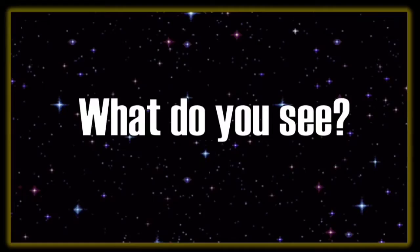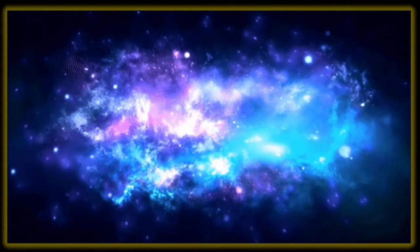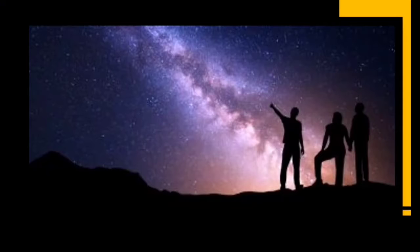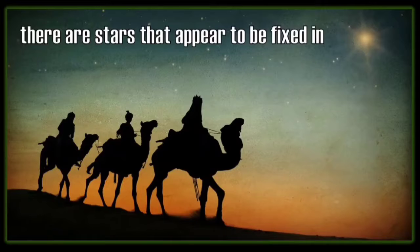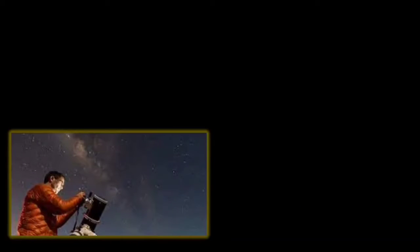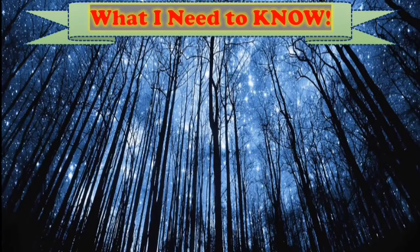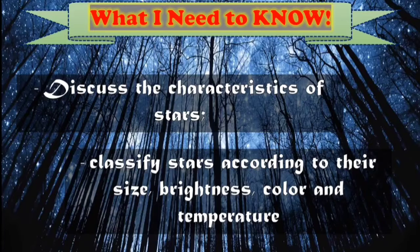Now, class, imagine and look at the night sky. What do you see? When we look at the night sky, many of us are amazed at the beauty of the tiny lights we see hanging in the dark. If the sky is clear, you will see hundreds of stars. Almost all of the stars you can see are part of the large system of stars called the Milky Way Galaxy. At the end of this lesson, you will be able to learn the characteristics of stars and classify stars according to their size, brightness, color, and temperature.